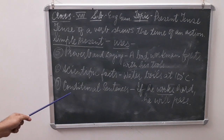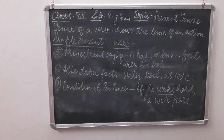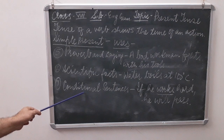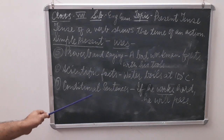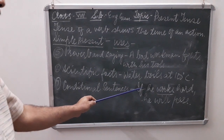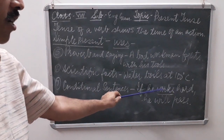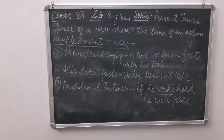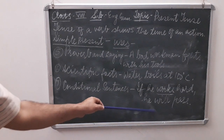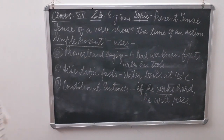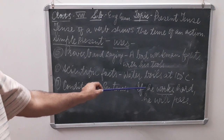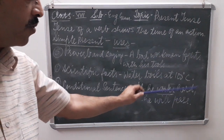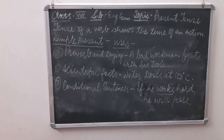There are three types of conditional sentences. In condition number one — the probable or possible condition — we use simple present in the if-clause. For example, 'If he works hard' is the condition, and the result is 'he will pass.' So in probable conditions, we use simple present in the if-clause and simple future in the result clause.